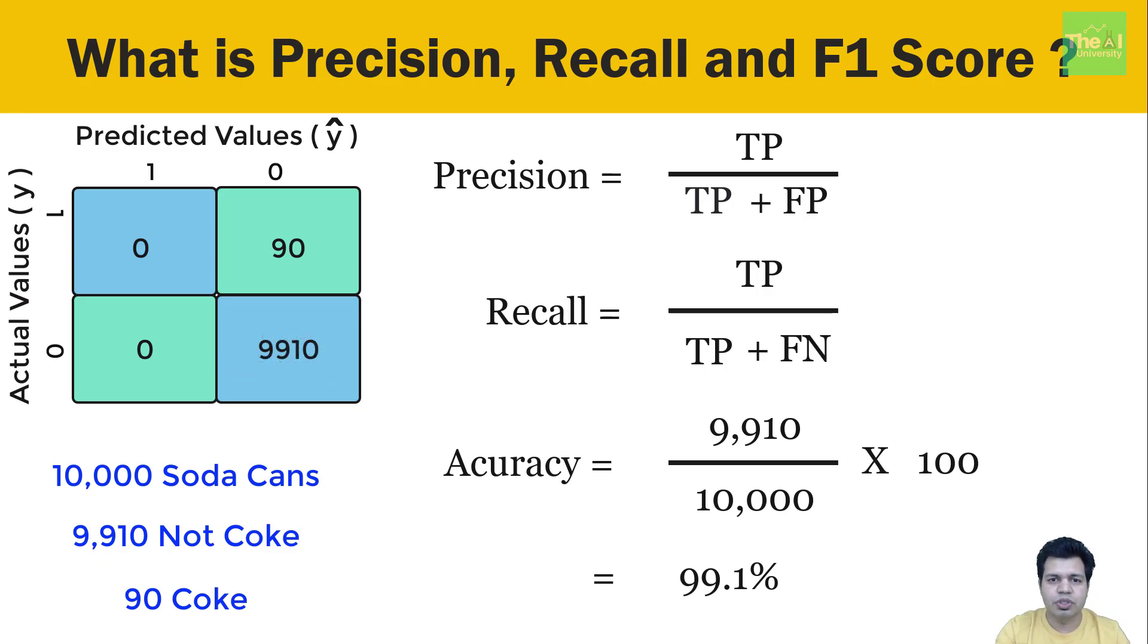Let's substitute these values in the precision and recall formulas. So precision will be calculated as 0 divided by 0 plus 0, which equals 0. So basically precision's value ranges from 0 to 1, and if the value of precision is 0, then it means that the test was negative.